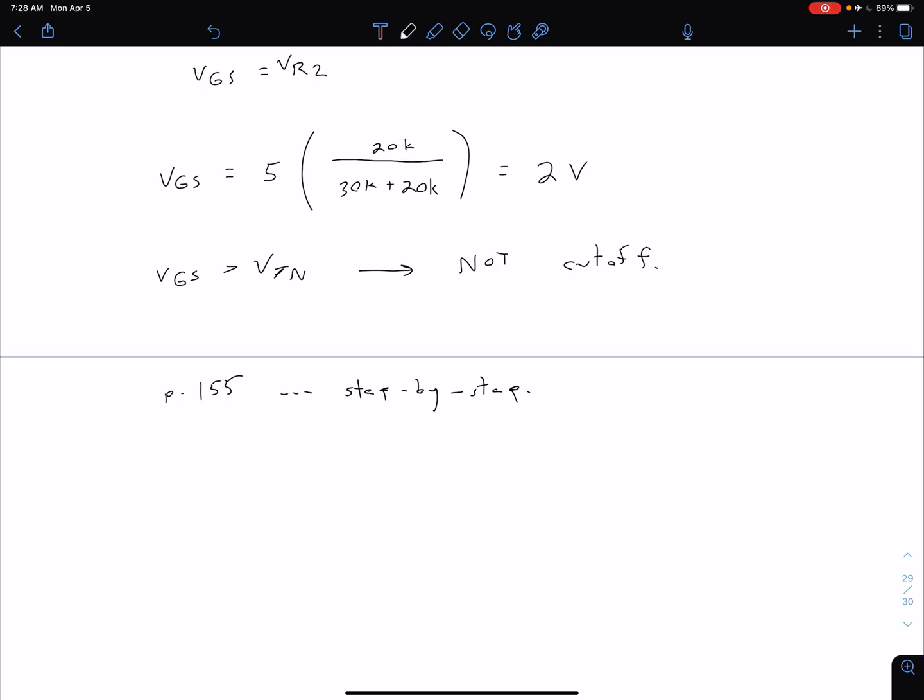And so what the textbook recommends that you do is to start out by assuming saturation. The reason for that is the equations in saturation are a little bit easier to deal with. We don't have to deal with a quadratic equation like we would for our non-saturation region. And after we work through and calculate these things, we're basically going to check our assumption. We're going to assume saturation. We're able to calculate our values, and then once we have those, we're going to go back and check our assumptions.